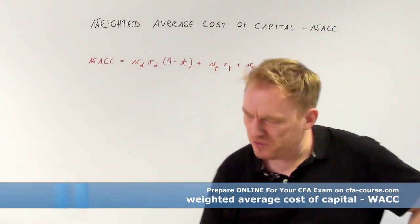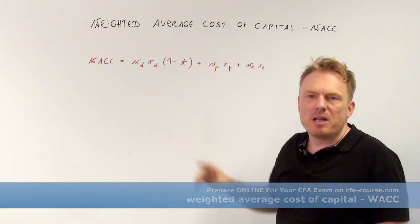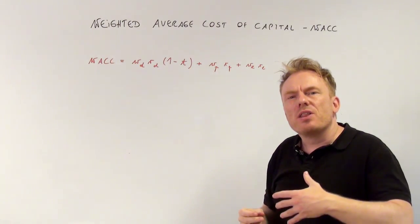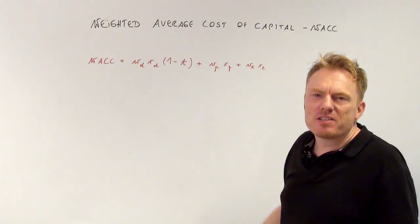There's the proportion of debt multiplied by the return the bondholders want to have and multiplied by 1 minus t.